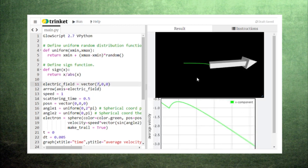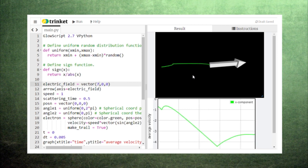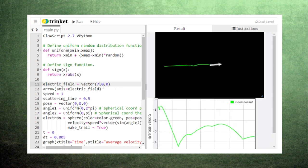If we increase the scattering time, the electron moves much farther between collisions. If we increase the strength of the electric field, the electron accelerates more between collisions, but it still resets its speed every time it strikes an atom.